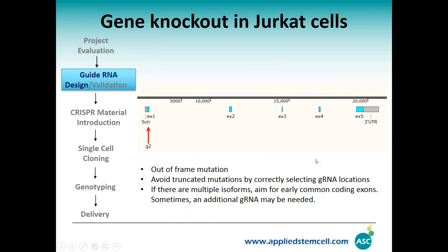Here is a real example: a researcher wanted to knock out a gene spanning five exons. When we design a knockout, the guide we pick ensures out-of-frame mutations and avoids truncated protein expression by selecting the guide location carefully. We usually keep away from the ATG — if you remove the ATG, the cell may find another ATG under the promoter and you might get truncated proteins. If there are multiple isoforms, we usually aim for the early common coding exons. If there is a specific isoform you want to keep that overlaps with a coding exon, the design will be more complicated, but we do have a solution.